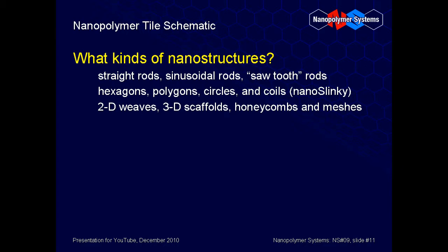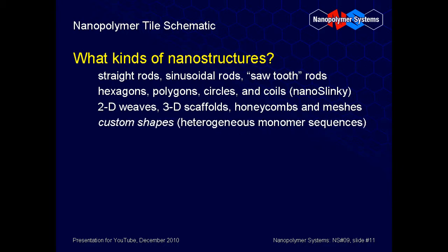Before advancing to derivatives, it is important to mention another entire category of NSC nanostructures: customized shapes derived from heterogeneous monomer sequences. In other words, using more than just two monomers to make a nanostructure. Heterogeneous nanopolymer sequences are exactly analogous to biological peptides and proteins derived from programmed sequences of the 22 naturally occurring amino acids. However, NSC polymers do not necessarily require water for synthesis, solubility, or function, and they have the potential to be 2 to 10 times smaller than biological enzymes of comparable complexity or functionality.